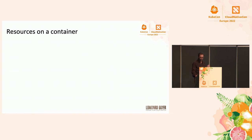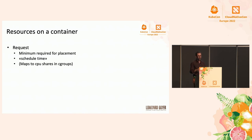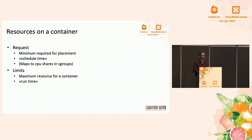When we talk about resources in a container, we need to account for two different notions. The first is requests — the minimum amount of resource required for Kubernetes to schedule your container on a specific worker node. This is a schedule-time notion, although for CPU it also maps to CPU shares in cgroups, so it's used at runtime as well. The second is limits — the maximum amount of resource your container will be able to use on a worker node, which is a runtime notion.